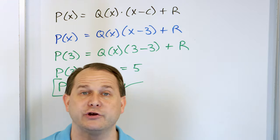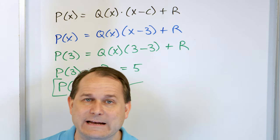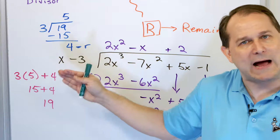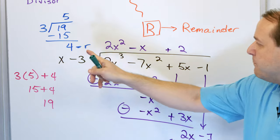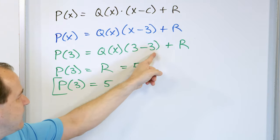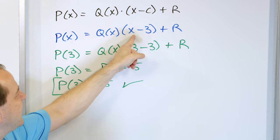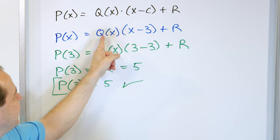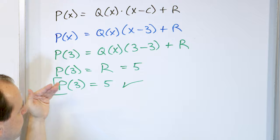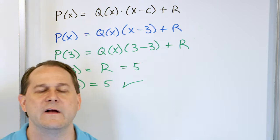If I'm trying to evaluate the polynomial at x equals 10, I want to divide by x minus 10 — because when I put 10 in, 10 minus 10 is zero, and this whole term drops out. So that's why it's not a coincidence that when you want to evaluate the polynomial at x equals 3, you divide by x minus 3.